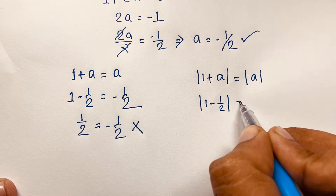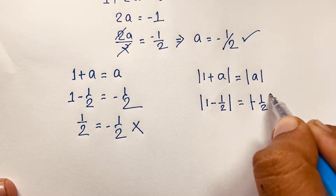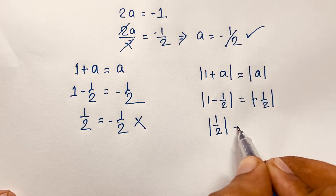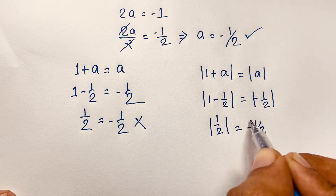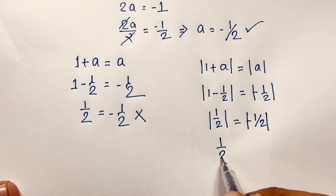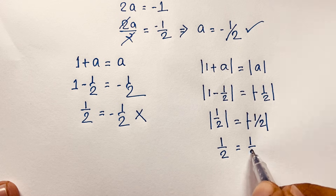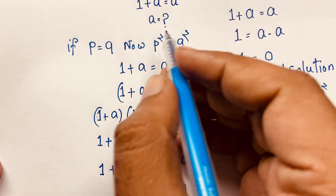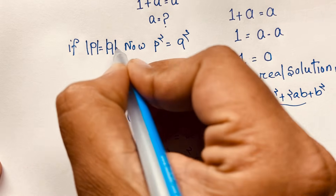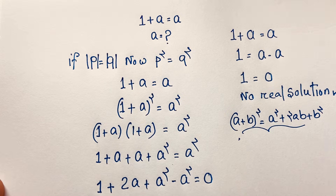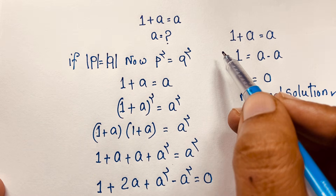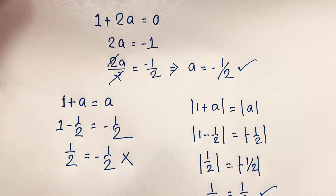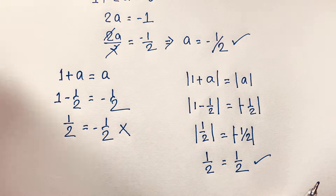This gives one-half equal to one-half in absolute value, and negative one-half equal to negative one-half. Both sides are equal in absolute value — both are positive. So this confirms that p equals q holds when p² equals q² for absolute values. Therefore, there is no real solution in this tricky math problem. Thank you all — if you enjoyed this, please subscribe to my channel for other interesting videos. Goodbye, take care everyone.